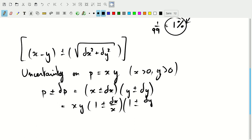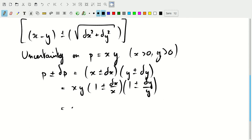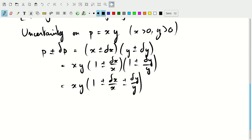If we now multiply everything together and ignore quadratic terms, we get x y times one plus or minus dx over x plus or minus dy over y. Now if we write this as p plus or minus delta p over x y...